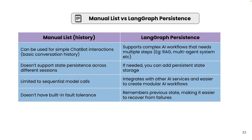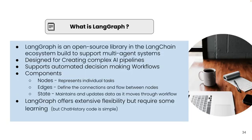Manual list doesn't have built-in fault tolerance. But LangGraph has a lot of advanced features — it supports complex AI workflows that need multiple steps, can be integrated with a database, easily integrates with other AI services, and makes it easier to create modular AI workflows. It can remember the previous state and makes it easier to recover from failures.